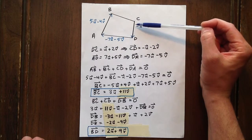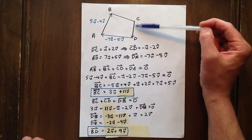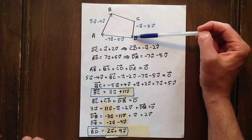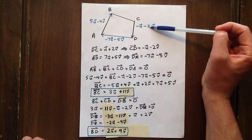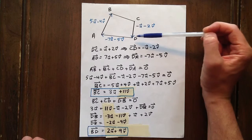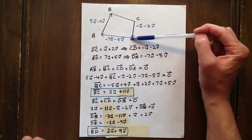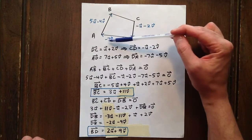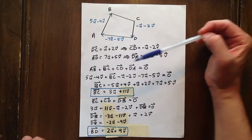DC equaling U plus 2V, which means CD equals negative U minus 2V, and finally AD equals 7U plus 5V, which means DA equals negative 7U minus 5V.